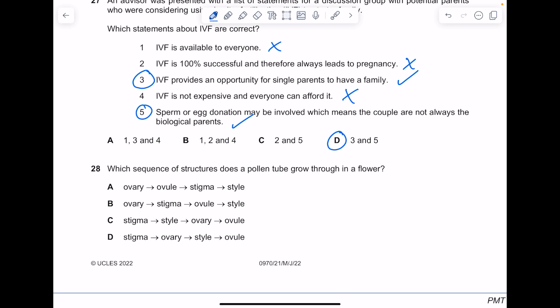Which sequence of structures does the pollen tube grow through in a flower? The pollen lands on the stigma, it then grows down the style, it enters the ovary and then finally the ovule. The answer here is C.